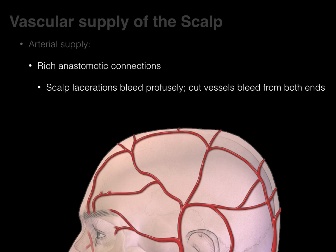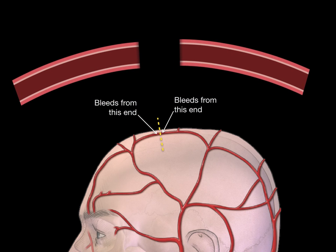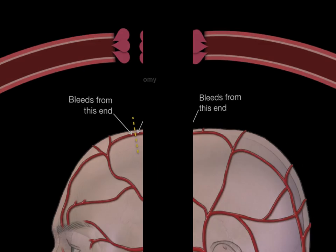Scalp lacerations bleed profusely because of so many anastomotic connections, and also because cut vessels bleed from both ends. Normally when you cut a vessel it only bleeds from the end being pumped from the heart, but scalp arteries bleed from both ends. Additionally, the rich connective tissue network in the scalp keeps the ends of these vessels open, so head injuries bleed heavily for both reasons.